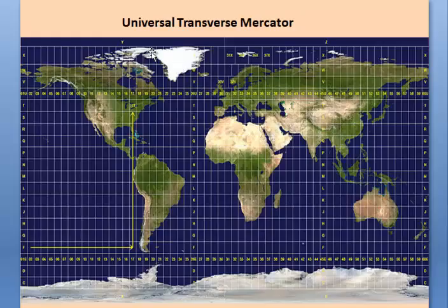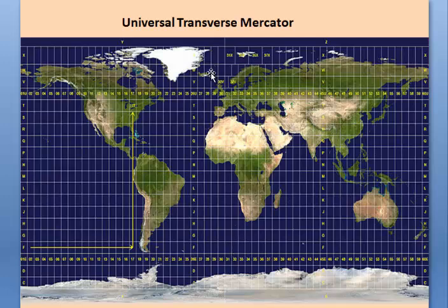This is how we describe location using UTM coordinates. Here, the longitude is divided into 60 zones, and the latitude, vertically, is divided into 20 zones.